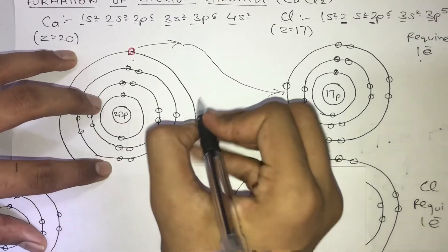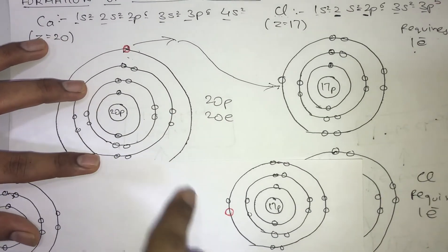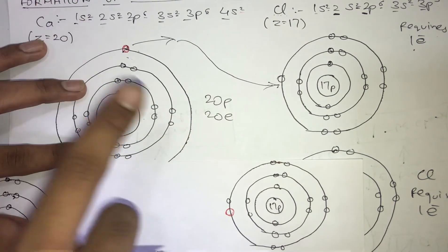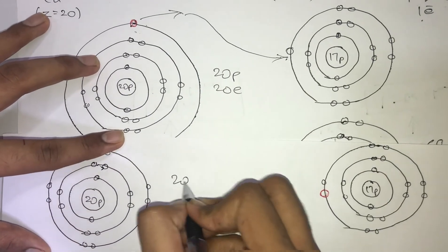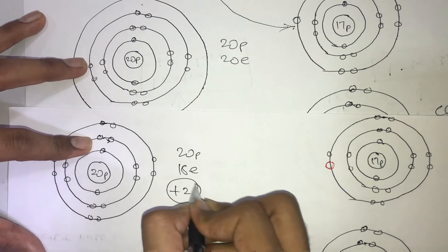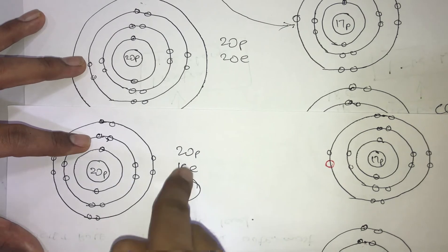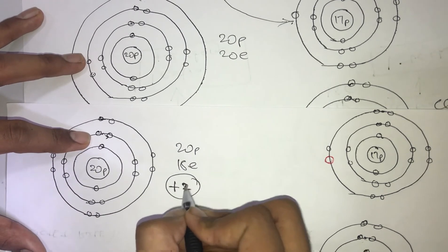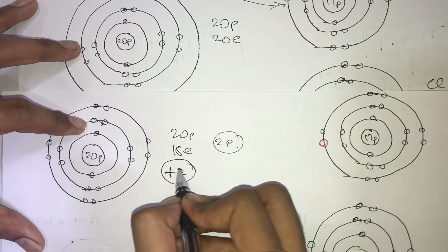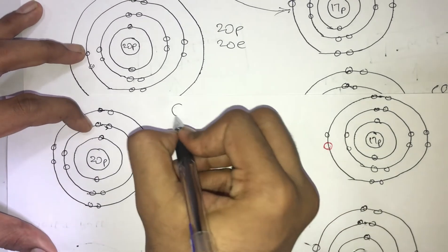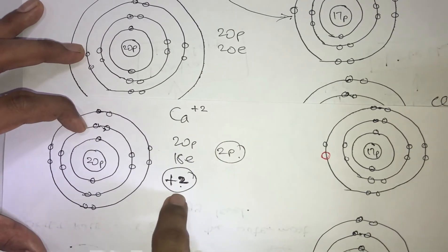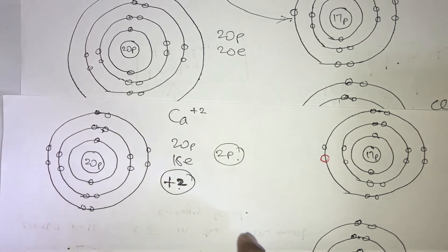Earlier this calcium atom had 20 protons and 20 electrons, so the positive charge equaled the negative charge and it was neutral. But now it has 20 protons and only 18 electrons. The positive charge is greater by two, so it has a +2 charge. Therefore this calcium atom now becomes Ca²⁺.